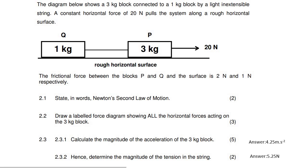Hello everyone! Welcome to this Newton Law exam question. What we have here is two objects that are connected, moving across a rough surface, so there is going to be friction. They're not telling us there's constant acceleration or constant speed. They tell us the friction force between P is going to be two newtons and for Q it would be one newton.